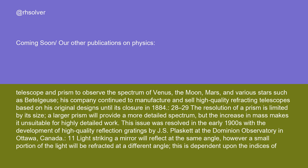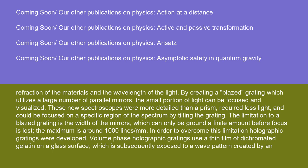The resolution of a prism is limited by its size. A larger prism will provide a more detailed spectrum, but the increase in mass makes it unsuitable for highly detailed work. This issue was resolved in the early 1900s with the development of high-quality reflection gratings by J.S. Plaskett at the Dominion Observatory in Ottawa, Canada. Light striking a mirror will reflect at the same angle; however, a small portion of the light will be refracted at a different angle, dependent upon the indices of refraction of the materials and the wavelength of the light. By creating a blaze grating, which utilizes a large number of parallel mirrors, the small portion of light can be focused and visualized. These new spectroscopes were more detailed than a prism, required less light, and could be focused on a specific region of the spectrum by tilting the grating.